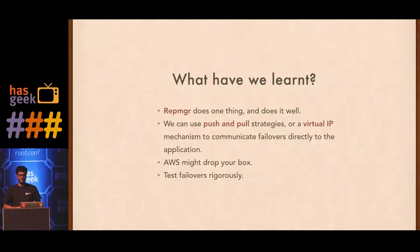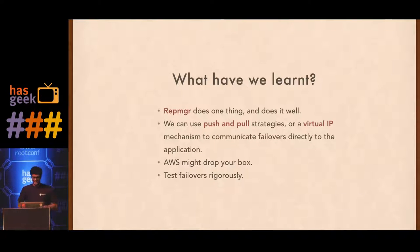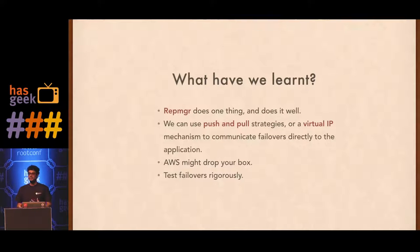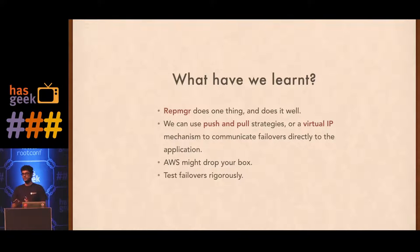What we learned: RepManager works, it does one thing, it does it well, and the code is surprisingly readable — just like Postgres, written by the same people. We can use push-pull strategies or a virtual IP mechanism to handle communication between the application and the cluster. We should be aware that AWS can drop our boxes and test that. You can also test failovers rigorously: we had a Vagrant setup with tests that would randomly shut down a node and cover all kinds of failure scenarios. We didn't go so far as to put this on CI, but I don't think that's impossible to do.